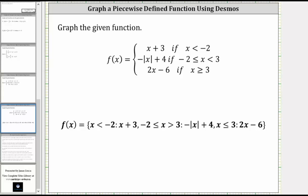This lesson will show how to use desmos.com to graph a piecewise defined function. We are given f of x equals x plus three if x is less than negative two; f of x equals the opposite of the absolute value of x plus four if x is greater than or equal to negative two and less than three; and finally, f of x equals two x minus six if x is greater than or equal to three.